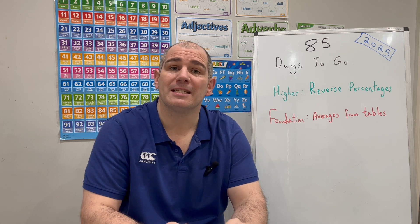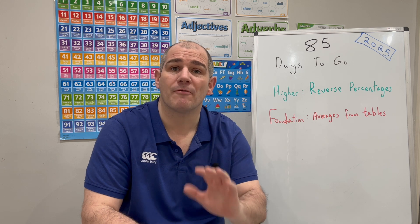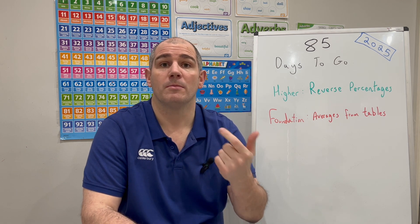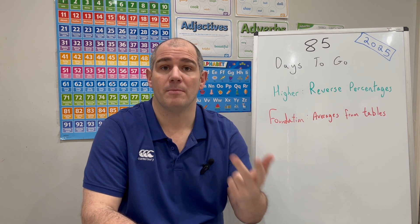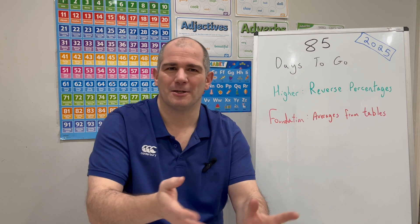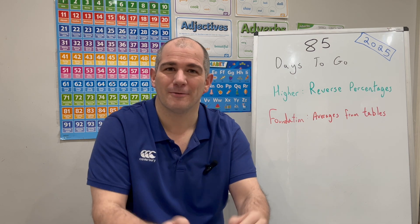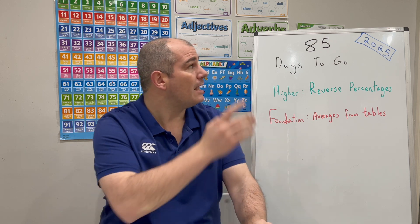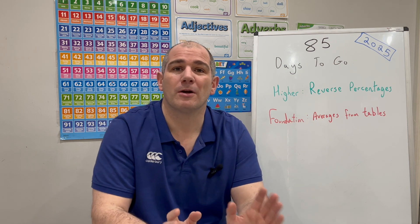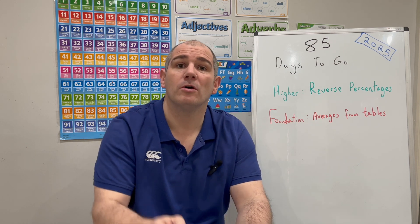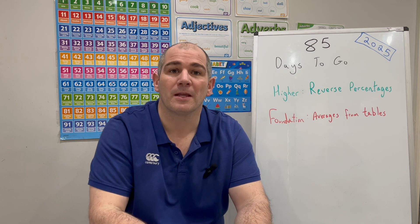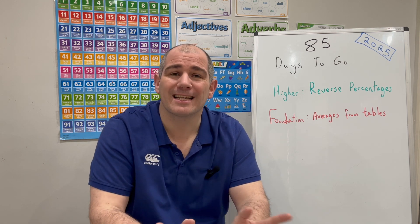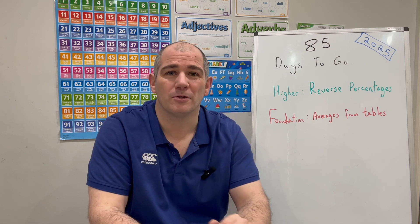If you're preparing for GCSE Foundation Maths, today your topic is averages from tables — so look at how to find the mode, the median, and the mean from tables, and also the range from tables. If you click the link in the top right-hand corner, that'll bring you directly to your video. Alternatively, there's a link in the description below. Really hope you find these videos useful — keep up with the hard work, you're doing fantastically well.